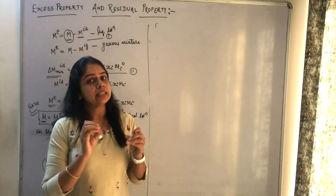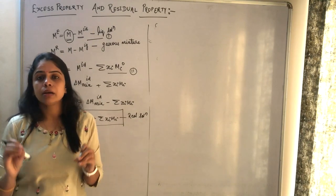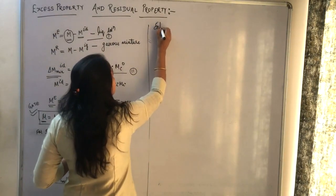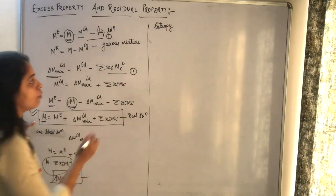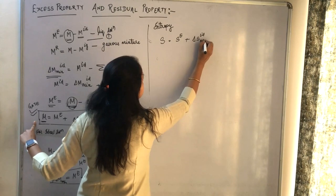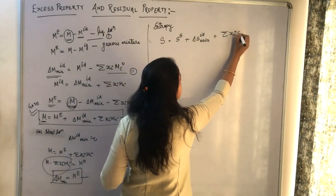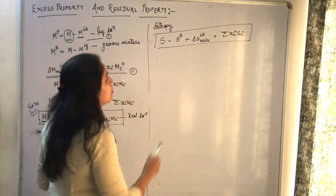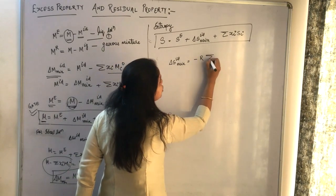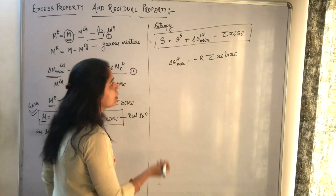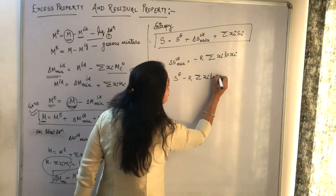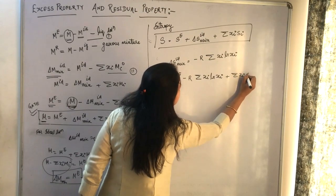In case of entropy, we know that even for an ideal solution, the change in entropy is not equal to zero. The general form is: s equals s_excess plus delta_s_ideal_mixture plus summation of xi*si. The change in entropy for the ideal solution is given by minus R summation of xi*ln(xi). Substituting, s equals s_excess minus R summation of xi*ln(xi) plus summation of xi*si.